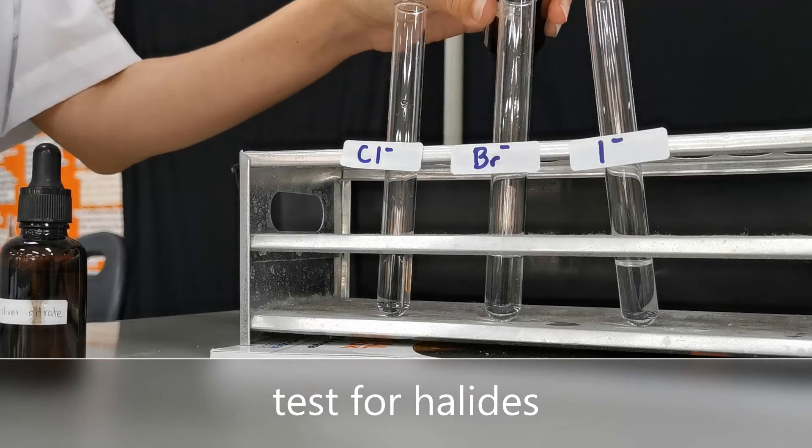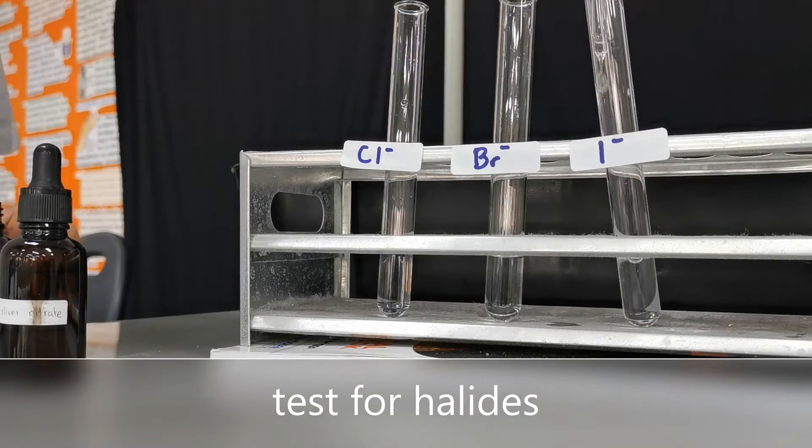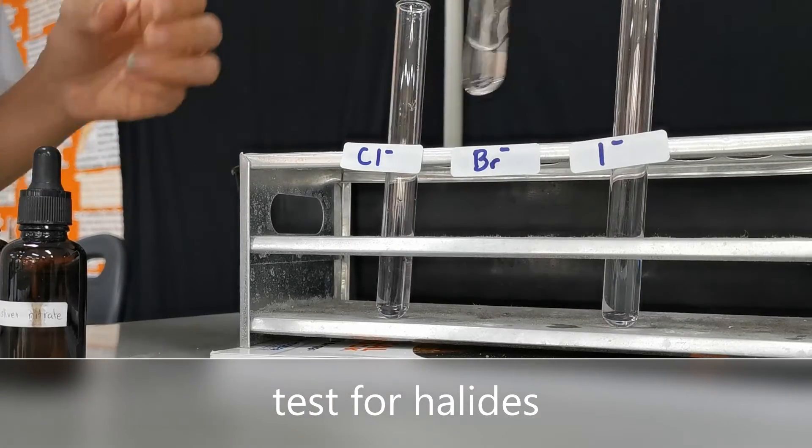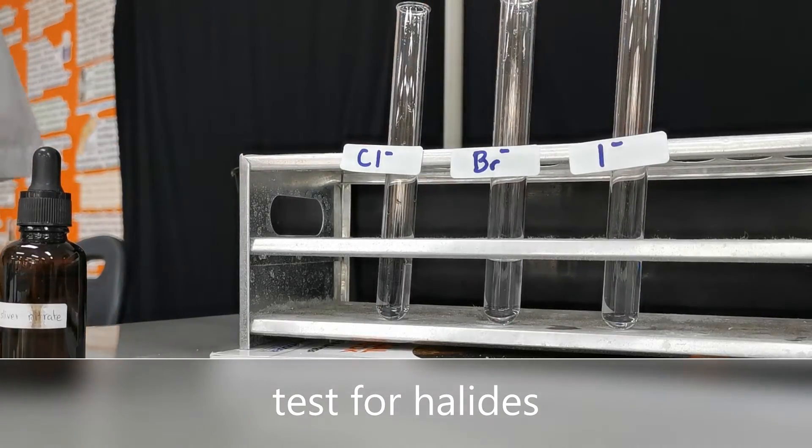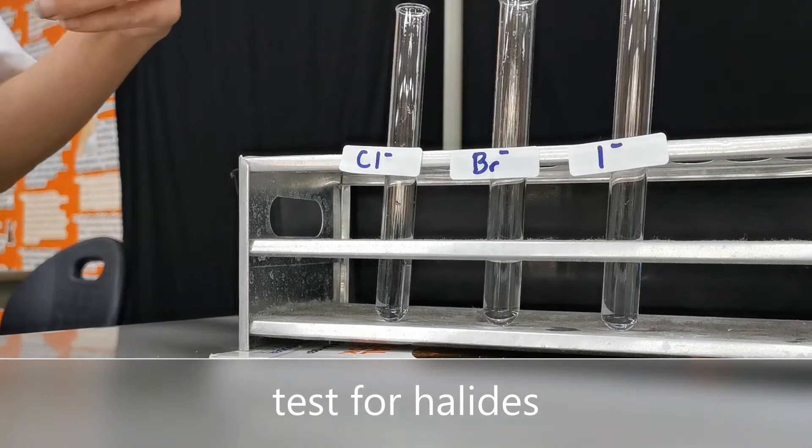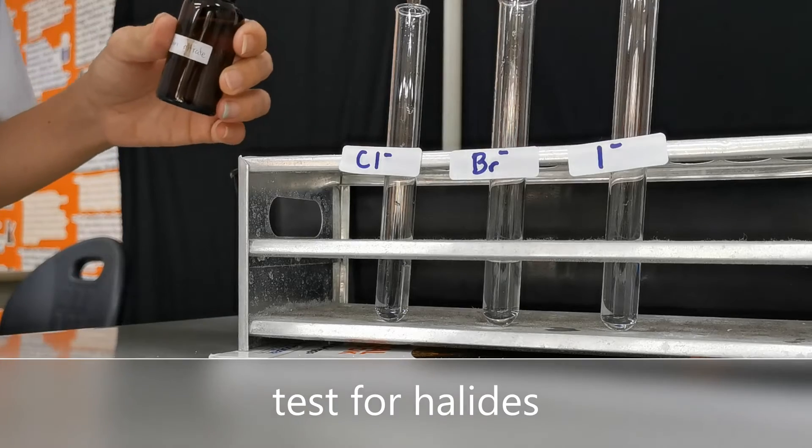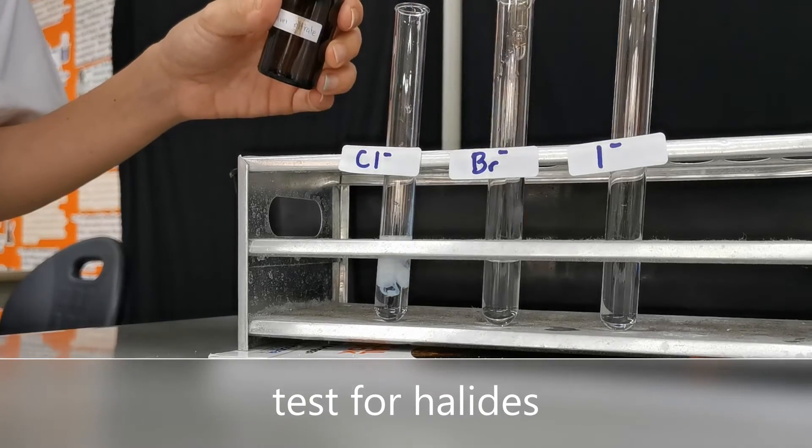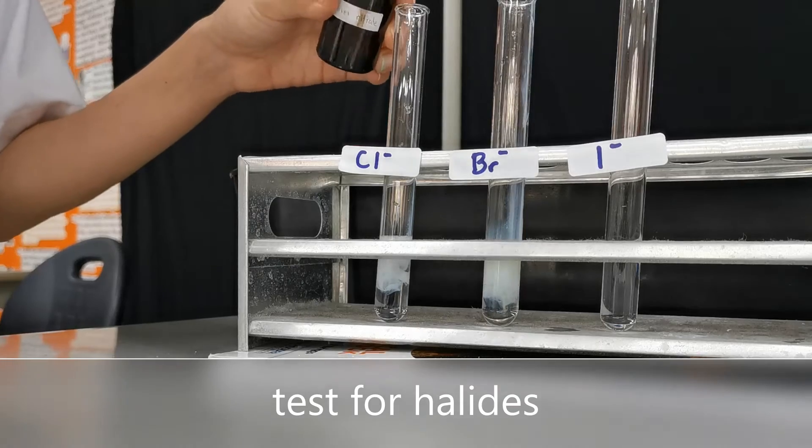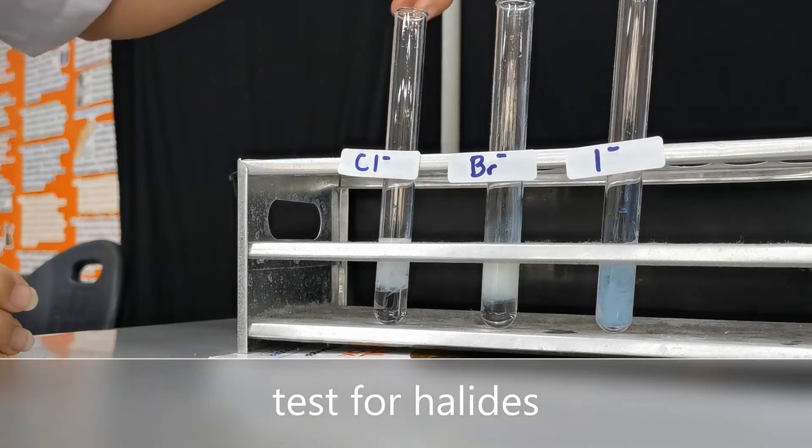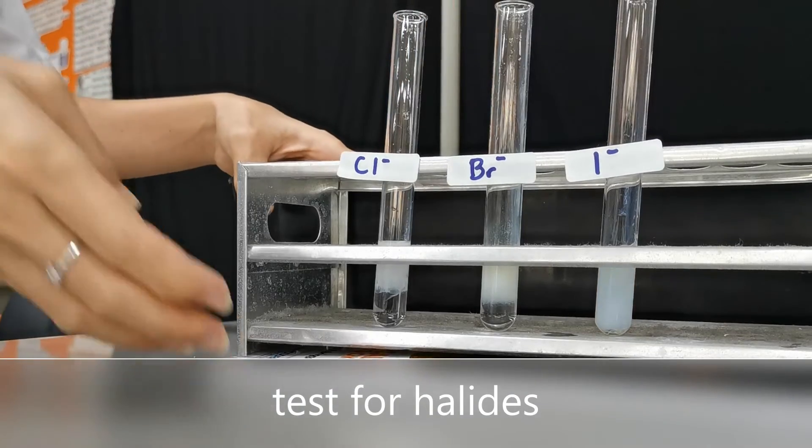Make sure that there are no carbonate ions remaining. The next addition is silver nitrate. Let's put a few drops of it so you can see the color difference.